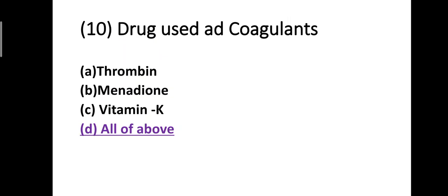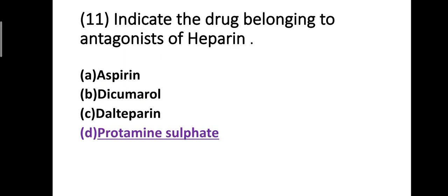Question number ten: Which of the following drugs are coagulants? Option A: thrombin, option B: menadione, option C: vitamin K, option D: all of the above. Correct answer is option D, all of the above. Thrombin, menadione, and vitamin K are all examples of coagulants.